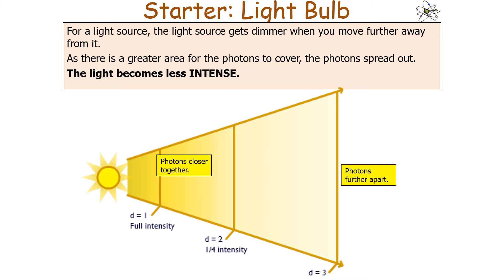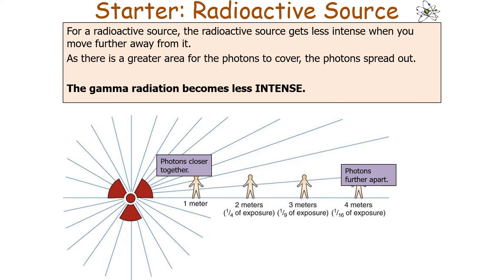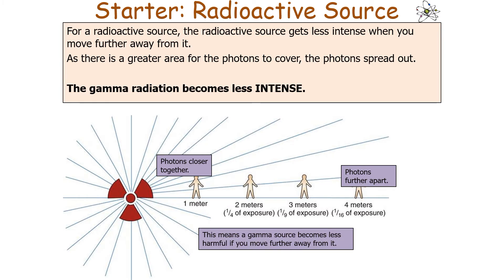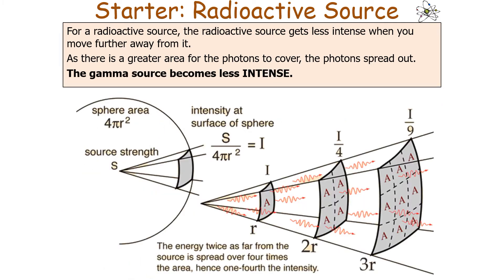For a light source, the light gets dimmer when you move further away because there's a greater area for the photons to cover. Similarly, for a radioactive source, it gets less intense when you move further away. The photons are closer together near the source and further apart as you move away, meaning a gamma source becomes less harmful if you move further away from it. This relationship is only shown with gamma emissions, because alpha and beta emissions are ionised by the air very quickly and don't travel far enough for this effect to be observed.